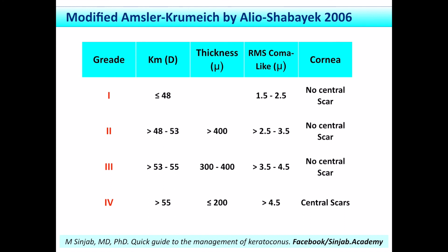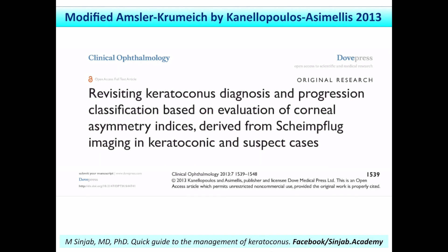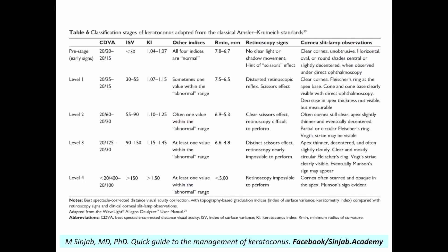In 2006, Alio and Shabaik replaced the spherical equivalent with the RMS of coma-like high-order aberrations. Later, in 2013, Canelopoulos and Asimilis added two indices to this classification: one is the ISV — the Index of Surface Variance — and the other is KI, the Keratoconus Index.